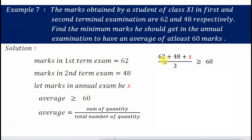So how do we solve it? 62 plus 48 will be 110 plus X divided by 3, which is greater or equals to 60. Now this 3 I'll multiply here, that will be 180. 60 times 3 will be 180. And now 110 I'll transpose it here, that will become negative 110.